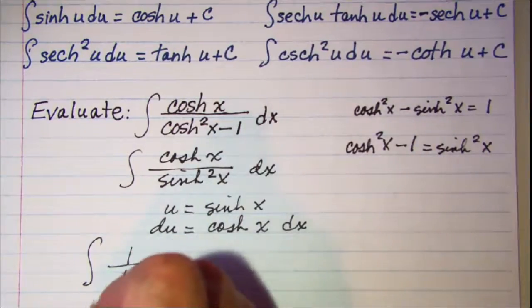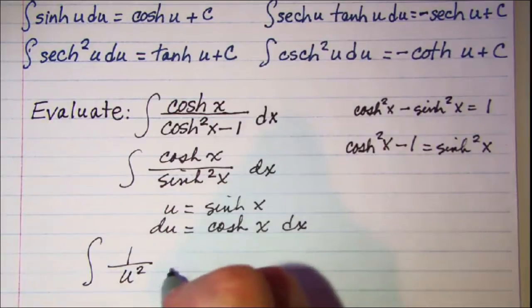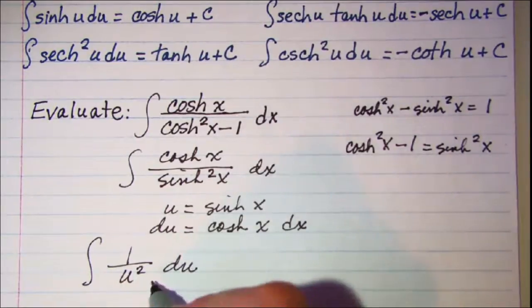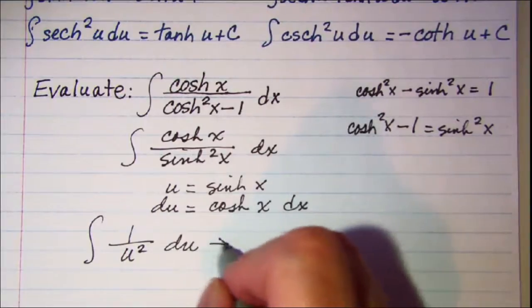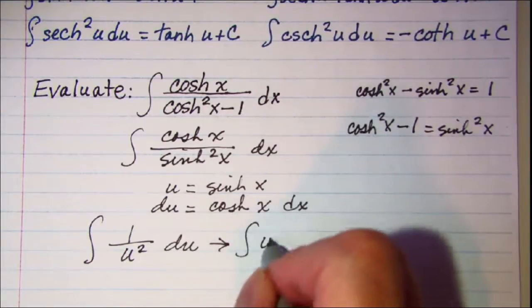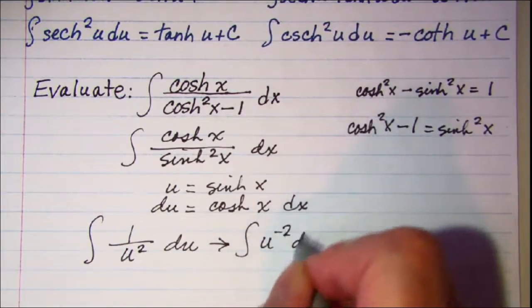Let me rewrite this with a negative exponent. This is the integral of u to the negative 2 du.